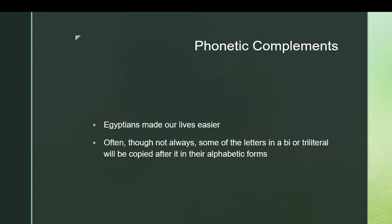There's another feature particular to bi- and tri-literals that we need to cover, which is phonetic complements. This is how the Egyptians indicated what was going on in a tri- or bi-literal by giving hints as to what they meant. Oftentimes they would write down some alphabetic letters after a bi- or tri-literal sign. If you have MN as your bi-literal and wanted to put the M first as a reminder, you would first have the owl for the M, and then the MN sign. If you wanted to use the N, you'd use the N after it. Most words will have at least one phonetic complement.